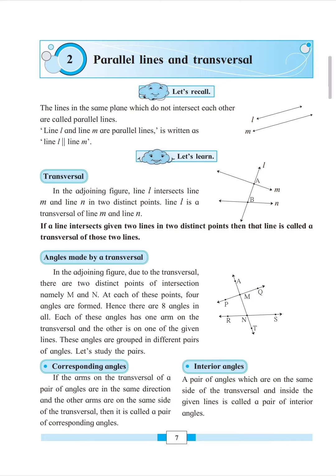Angles made by a transversal: when a transversal line passes through two different lines, how many angles will it make? It will make eight different angles - four angles at one line and four more angles at another line.